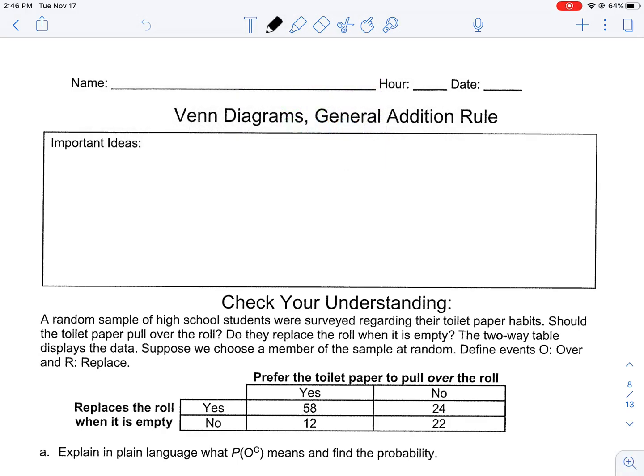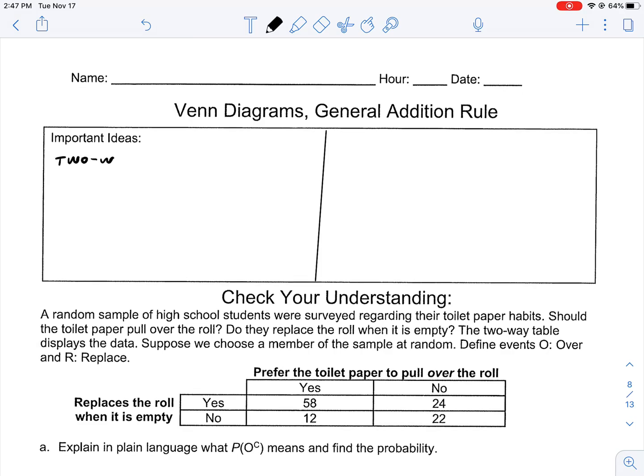This first box is going to be divided in half. As we look at Venn diagrams and probability and the general addition rule, how they all fit together, I think it's important to understand that two-way tables and Venn diagrams, they go together.